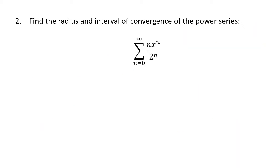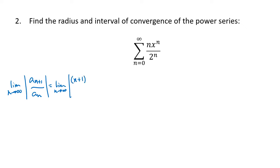For the next example, we approach it the same way using the ratio test. We get a fraction over a fraction, so we flip over the bottom fraction and multiply. We end up with the absolute value of (n+1) times x to the n+1 over 2 to the n+1, multiplied by 2 to the n over n times x to the n. The x to the n+1 and x to the n simplify to leave an x on top, and 2 to the n over 2 to the n+1 leaves a 2 on the bottom.